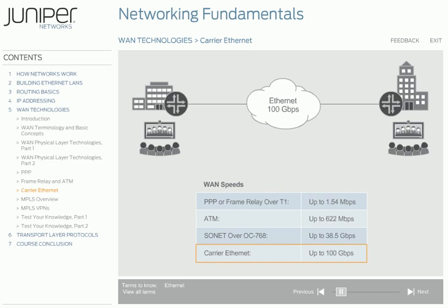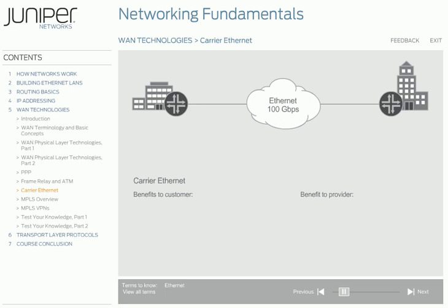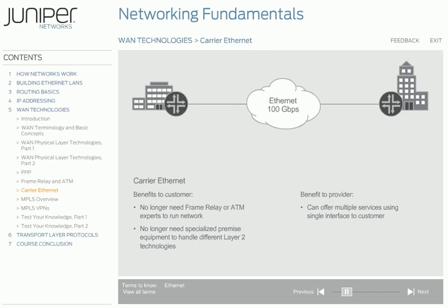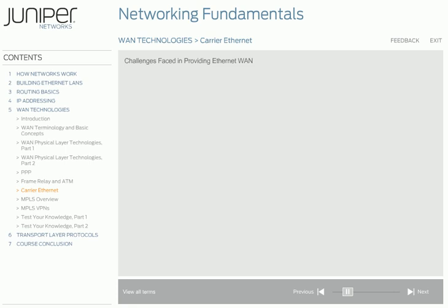An Ethernet solution in the WAN benefits both the service provider and the customer. Using Ethernet as the WAN solution, the customer no longer needs Frame Relay and ATM experts to run the network. Customers no longer need specialized premise equipment to handle different Layer 2 technologies, and service providers can offer multiple services using a single interface to the customer. Before Ethernet WAN could be offered to customers, service providers needed to surmount a number of challenges. Usually when a customer purchases WAN service, service level agreements, or SLAs, are in place to ensure that the service provider provides good service to the customer. Common SLAs would cover frame delay and frame loss. Service providers needed to be able to provide and prove the same level of service with Ethernet that a customer could get from PPP, frame relay, or ATM.